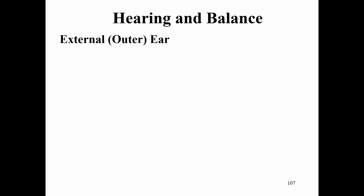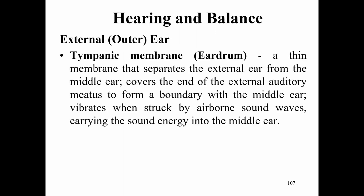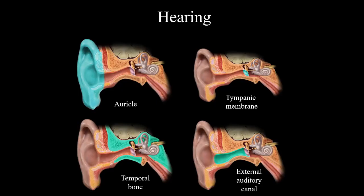The tympanic membrane, or eardrum, is a thin membrane separating the external ear from the middle ear. It covers the end of the external auditory meatus and vibrates when struck by airborne sound waves, carrying sound energy into the middle ear. The auricle is the outer portion, the external auditory canal is the middle portion, and the tympanic membrane is the final boundary.